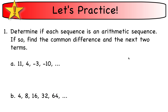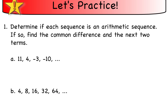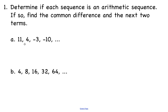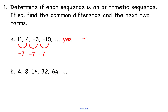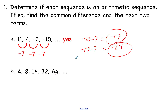Let's take a look at some practice problems where we determine if the given sequences are arithmetic. For the first one, we start with 11 and go to 4, going down by 7. From 4 to negative 3 is down 7 again, and from negative 3 to negative 10 is negative 7 as well. So this is an arithmetic sequence, and the next two terms are found by subtracting 7: negative 10 minus 7 gives negative 17, and negative 17 minus 7 gives negative 24.